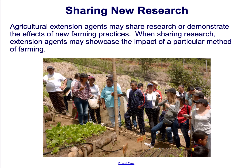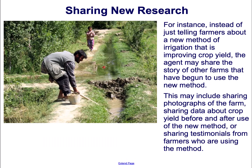Agricultural extension agents may share research or demonstrate the effects of new farming practices. When sharing research, extension agents may showcase the impact of a particular method of farming. For instance, instead of just telling farmers about a new method of irrigation that is improving crop yield, the agent may share the story of other farmers that have begun to use the new method.